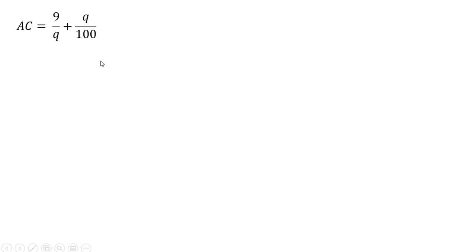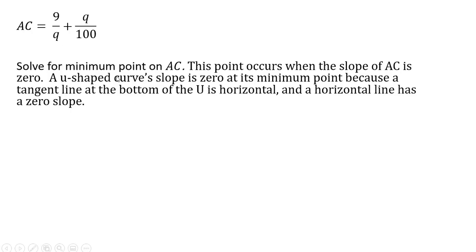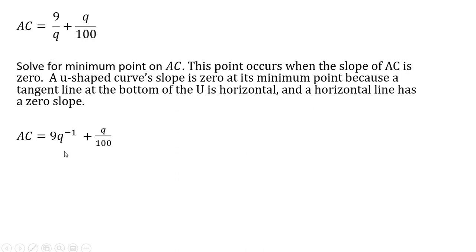Rewriting that, we want to solve for the minimum point on the average cost curve. This point occurs when the slope of average cost is zero. With a U-shaped cost curve, the slope will be zero at the minimum point because the tangent line at the bottom of the U is horizontal. We can rewrite the average cost equation, moving Q up into the numerator following the rules of exponents, so we can take the derivative without using the quotient rule.